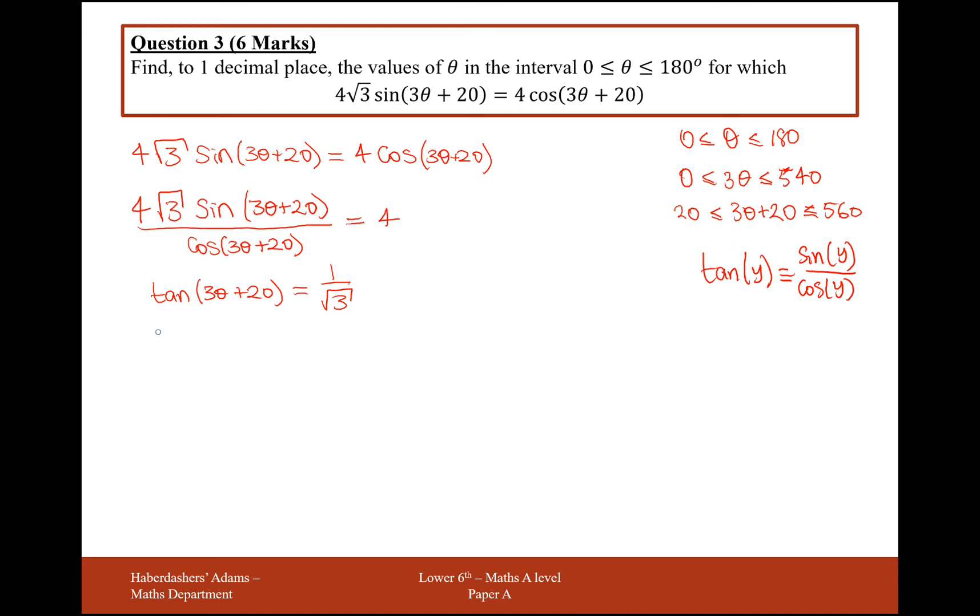What I'm going to do next is now do the inverse of tan here. So 3θ + 20 is going to equal tan to the minus 1 of 1 over √3. And for GCSE knowledge, I know that tan⁻¹ of 1 over √3 is going to equal 30 degrees.